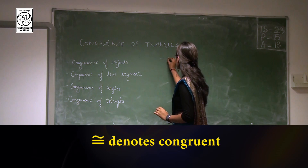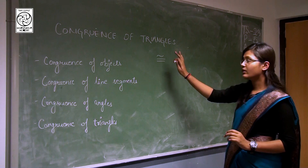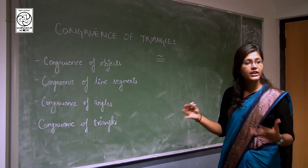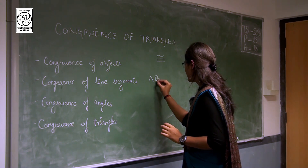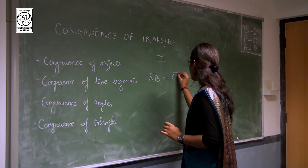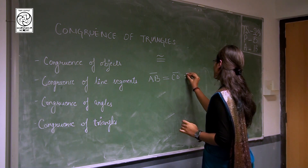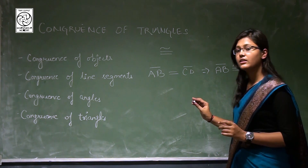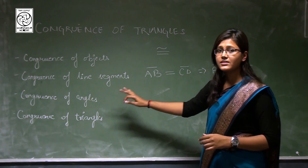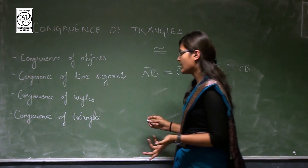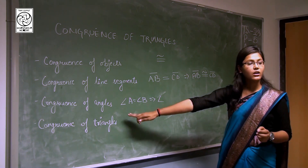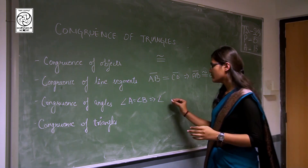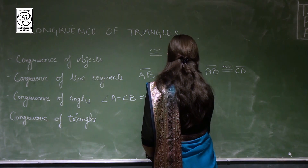The symbol of congruency is an equals sign with a curve over it. So when I say two line segments are congruent, I write line segment AB is congruent to line segment CD. Similarly, if two angles are equal, it means they are congruent because they have the same measures. So angle A equal to angle B can also be written as angle A is congruent to angle B.